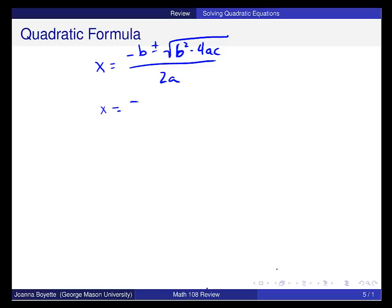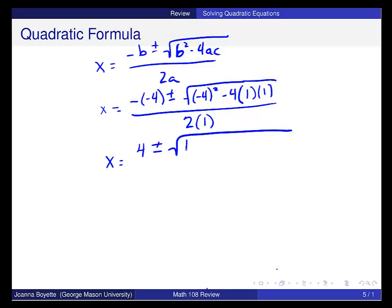b was negative 4, so I have negative negative 4 here, plus or minus the square root of negative 4 squared minus 4 times a, which was 1, times c, which was 1. All over 2 times 1, because that was my a. Simplify negative negative 4 is 4 plus or minus the square root of 16 minus 4 over 2. And x is equal to 4 plus or minus the square root of 12 over 2.